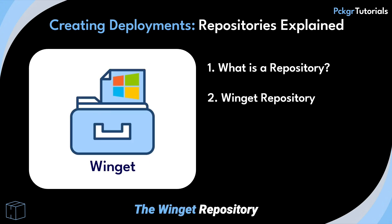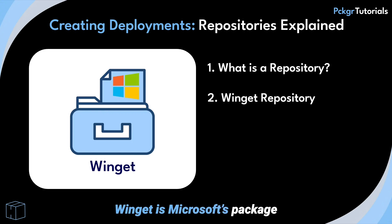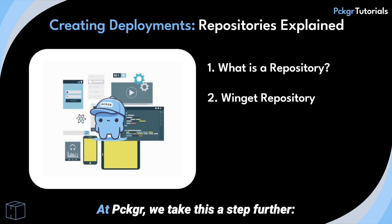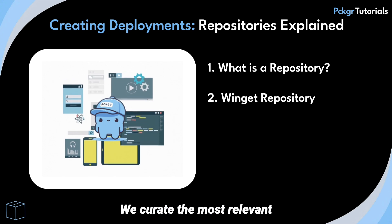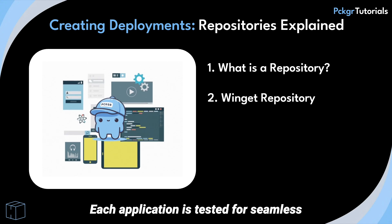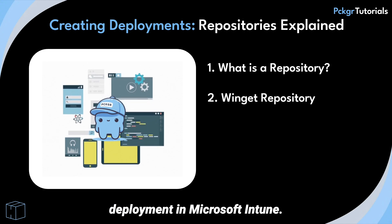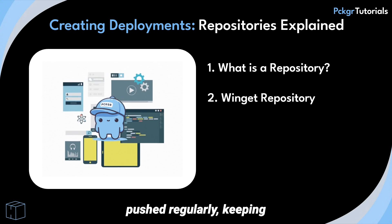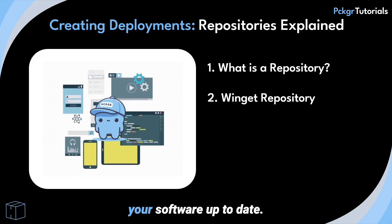The Winget repository is at the core of Packager. Winget is Microsoft's package manager for Windows, with a public repository hosting thousands of security-validated apps through Microsoft's thorough checks. At Packager, we take this a step further — we curate the most relevant and popular applications. Each application is tested for seamless deployment in Microsoft Intune, and we ensure that updates are pushed regularly, keeping your software up to date.